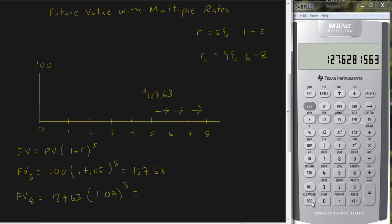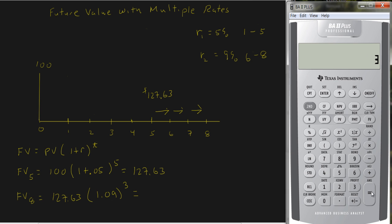And so let's see what we get here. 1.09, raise it to the 3rd power, and then times the 127 lump sum, 127.63 we found in year 5, and we get 165.28.